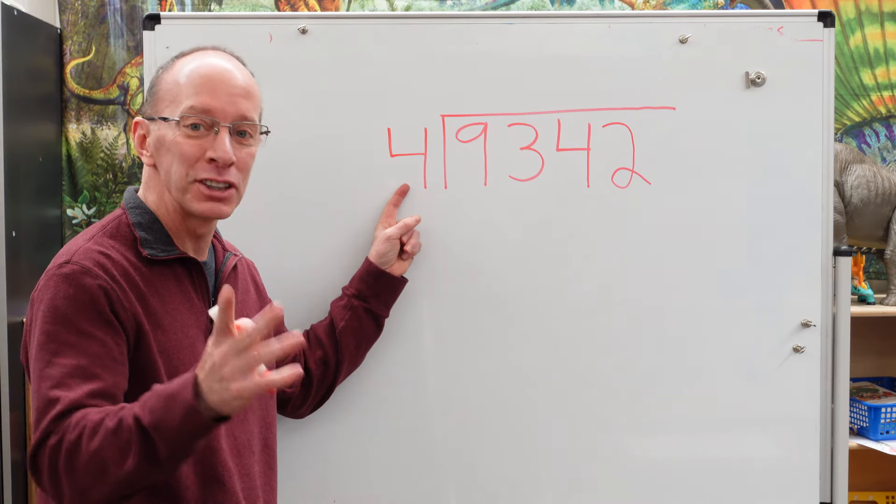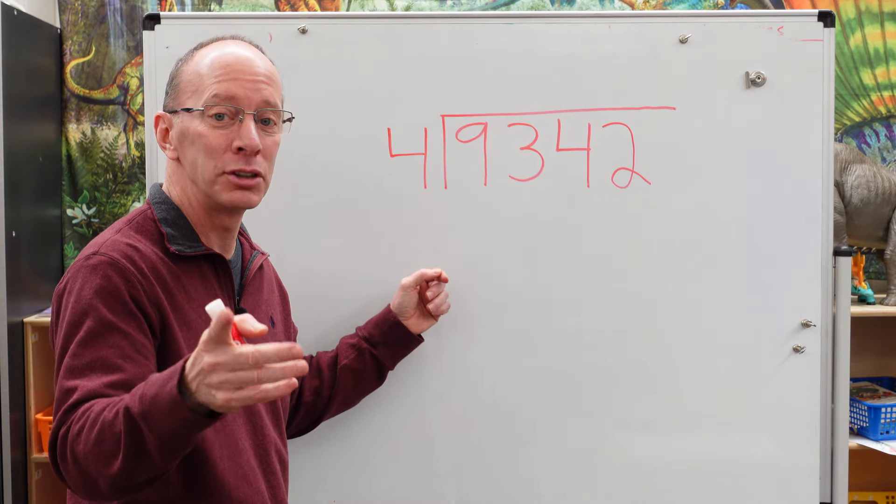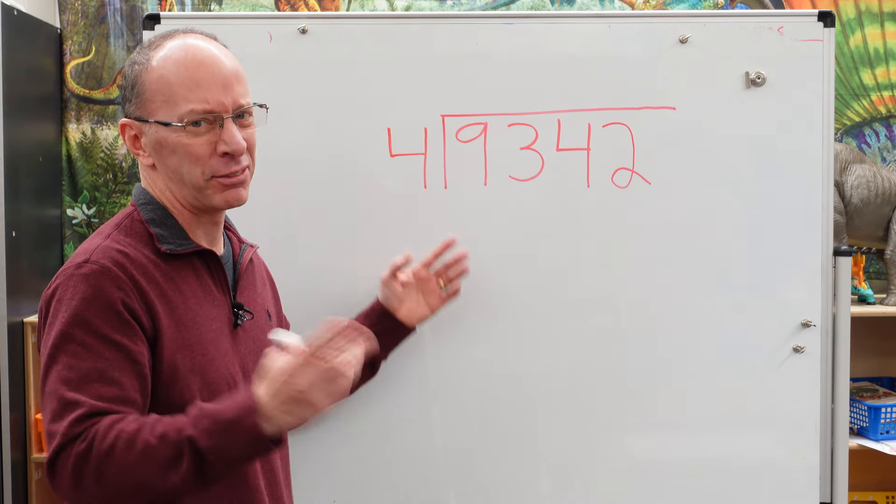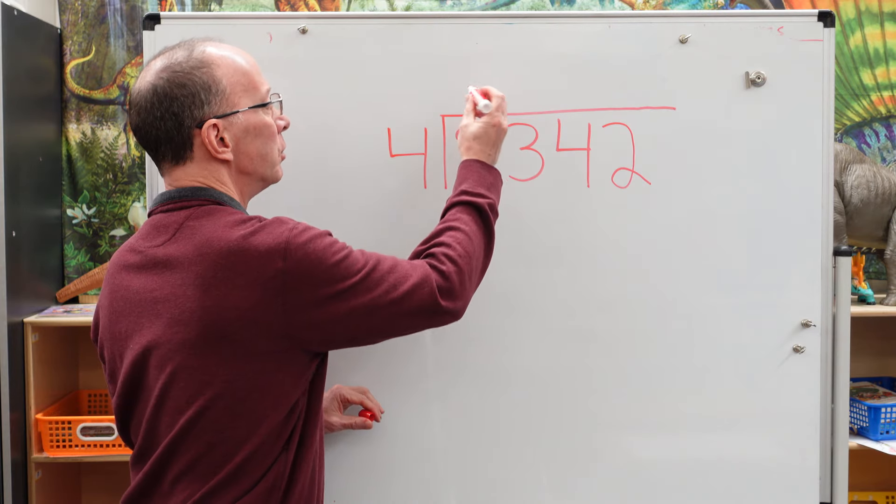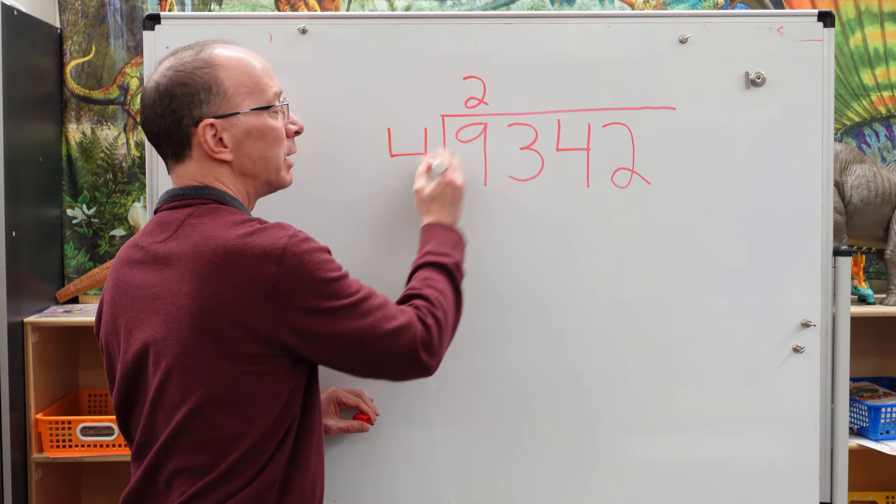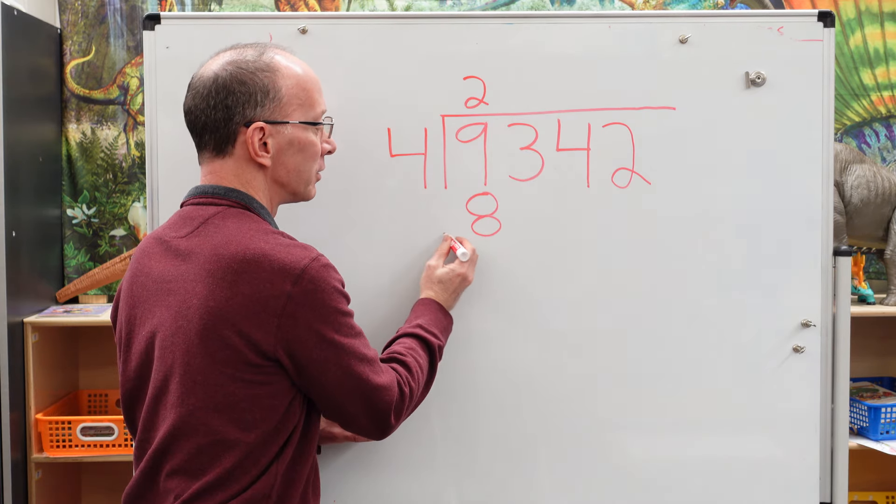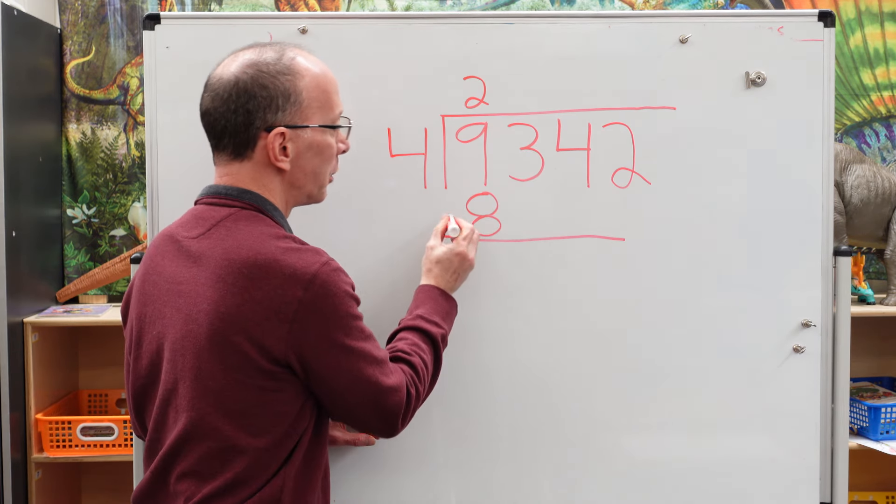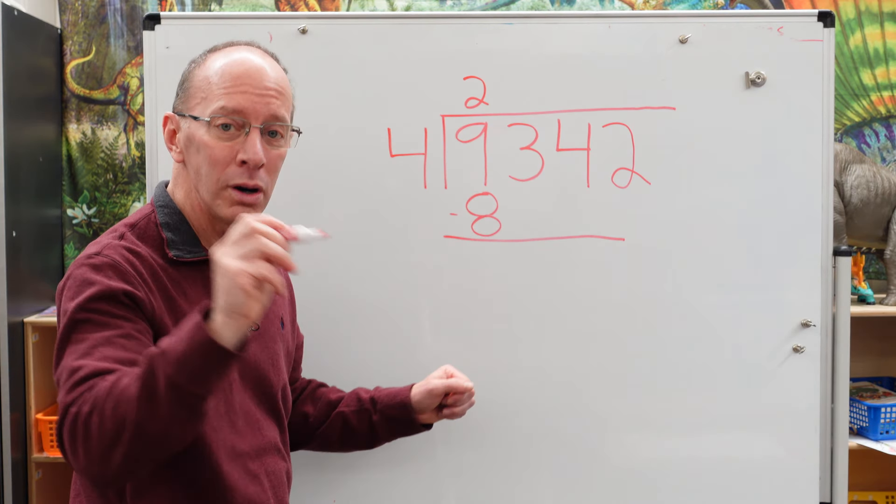All right. So first of all, how many times can I put four into nine? Four times one is four. Four times two is ocho. Four times three is 12. Too much. Bring it down. So we do two times four is eight. Don't be late. So put a line underneath here. Put that subtraction. Nine minus eight. One. Right.